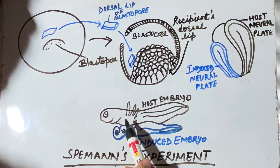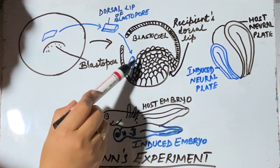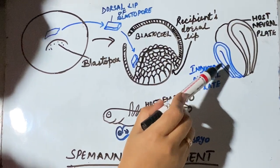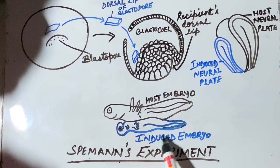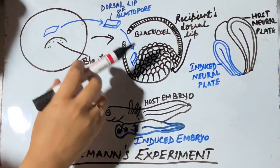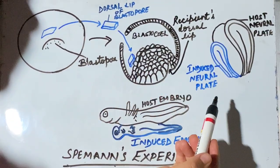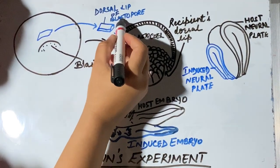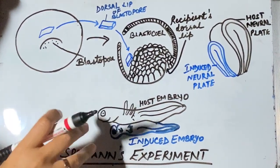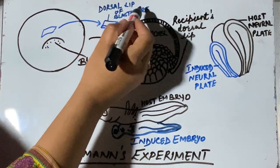This shows that the dorsal lip of blastopore induced the formation of the nervous system and its associated structures, leading to the formation of a complete embryo. It means the dorsal lip of blastopore has the potential to develop into a complete embryo. That is why the dorsal lip of blastopore is also known as the organizer — Spemann gave the term primary organizer to this dorsal lip of blastopore.